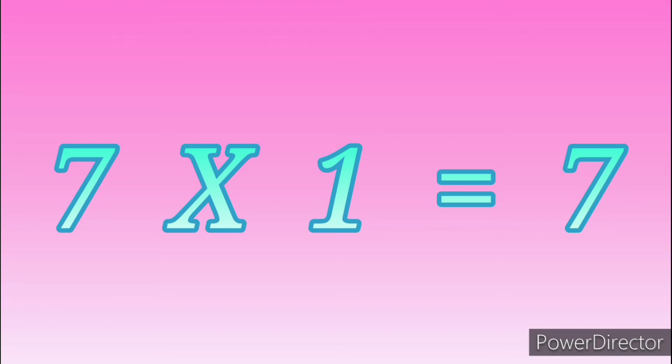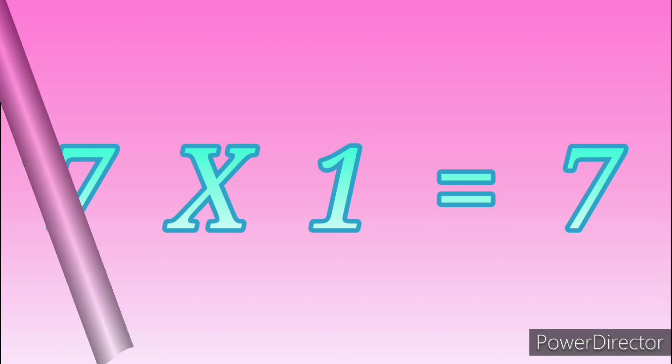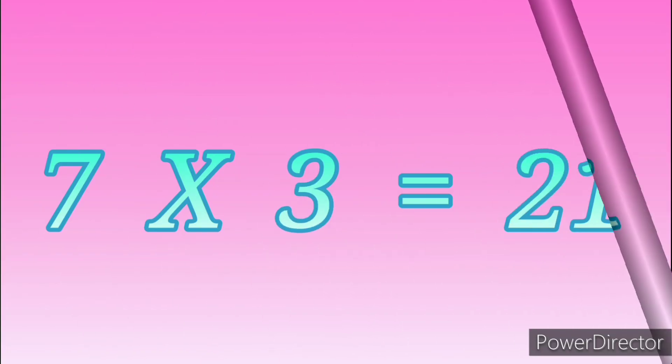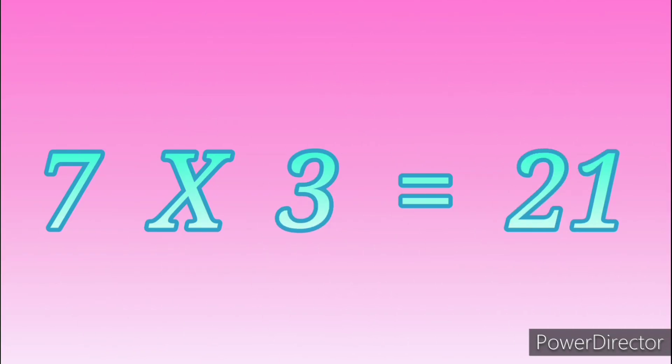Table of Seven. 7 ones are 7. 7 twos are 14.